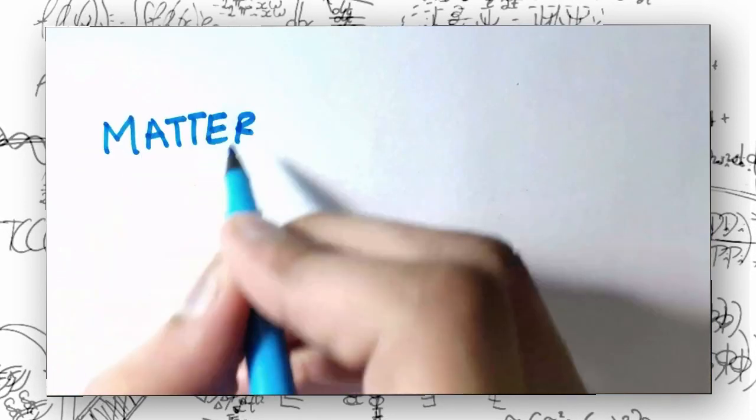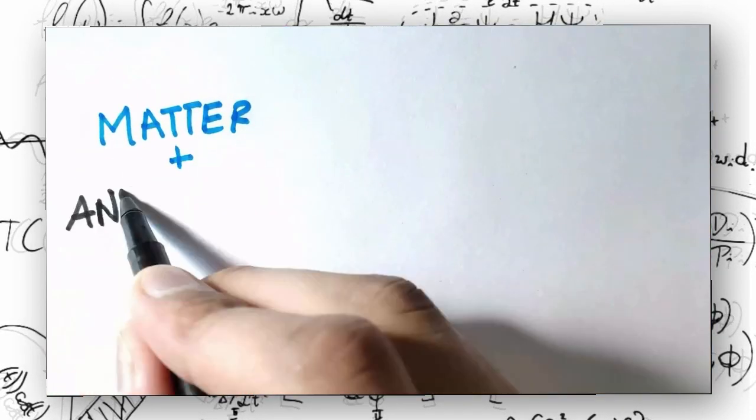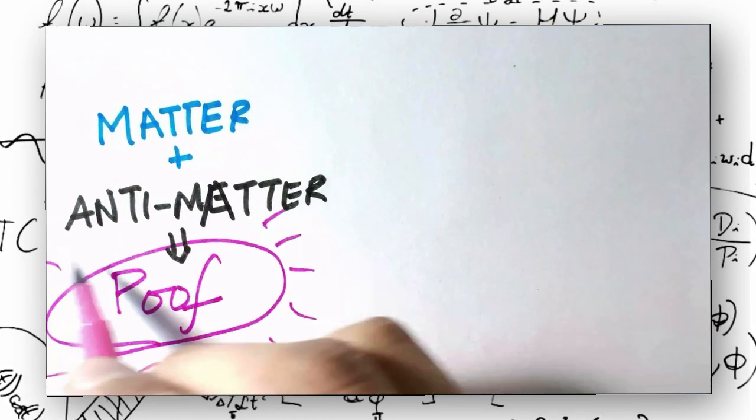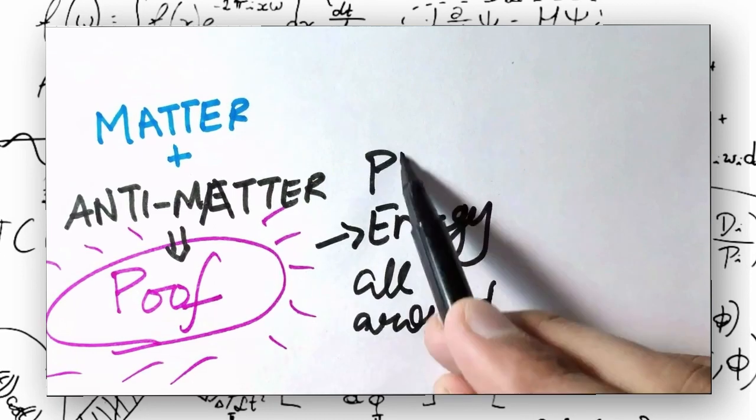This would imply that there is plenty of antimatter to annihilate with ordinary matter, which is not a good thing. As a result, thinking about dark matter or dark energy coming from antimatter is pretty concerning.